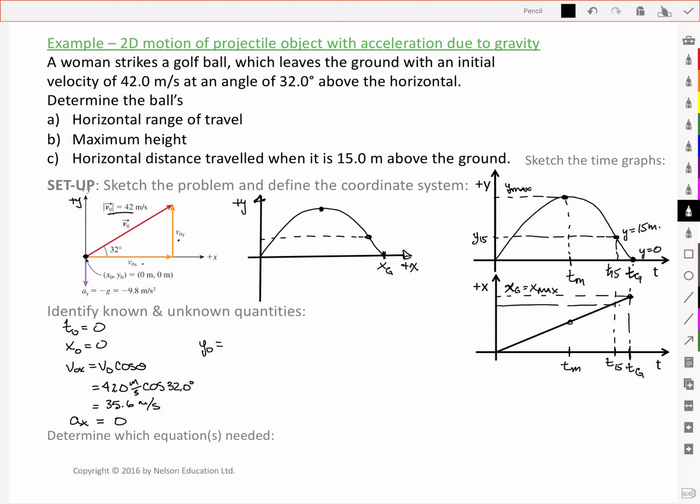For y, we've got y0 is also 0. Our v0y is equal to v0 sin of theta. Using this theta here, as I should have pointed out. This is then 42 meters per second, times sin of 32 degrees. Or a value of 22.3 meters per second. And our acceleration in the y-axis is a negative g.